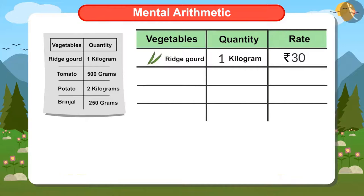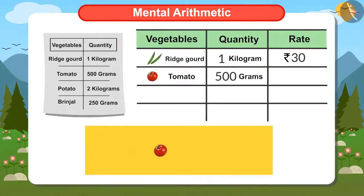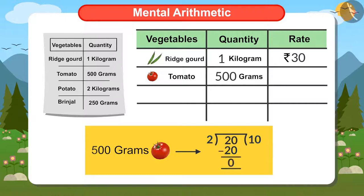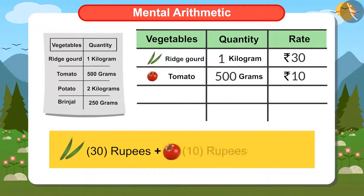I have also bought half a kilo of tomatoes, and the price of tomatoes is 20 rupees a kilo. To find the cost of half a kilo of tomatoes, I have to divide 20 by 2. Two 10s are 20, which means 10 rupees is the cost of half a kilo of tomatoes. Ridge guard and tomato cost 40 rupees together.